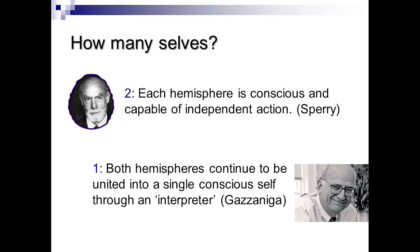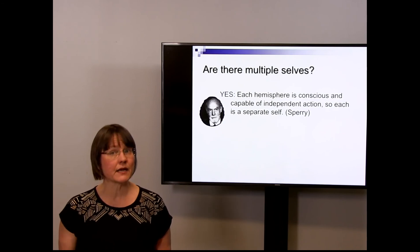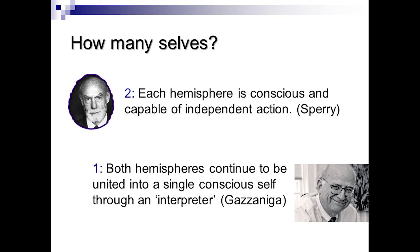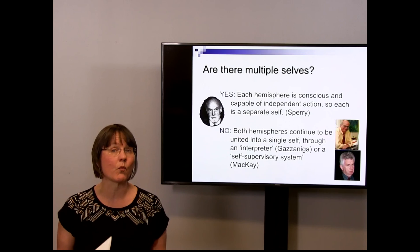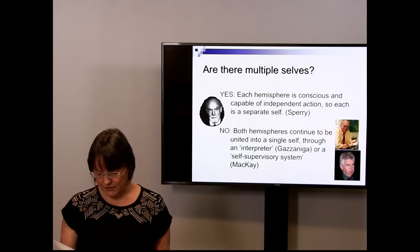If you're Sperry, you think there are two selves — each hemisphere is conscious and capable of independent action, so split brain patients have two selves and two consciousnesses. But you might say both hemispheres continue to be united in a single self. Gazzaniga thinks there's a single self because only the left brain is conscious — reportability is, for Gazzaniga, essential to consciousness. Only the left hemisphere, which he calls the interpreter, is conscious because only it can say what it's conscious of. If you think reportability is essential to consciousness, then there's just one consciousness and one self, and the right hemisphere is not conscious and not a self.